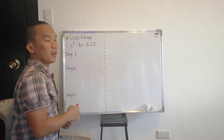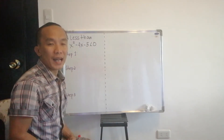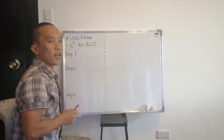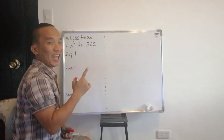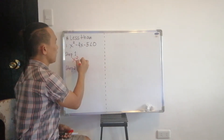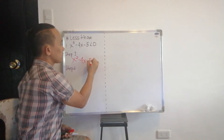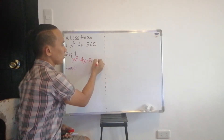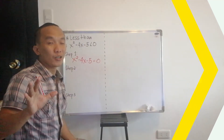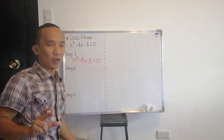Step one: since this is a quadratic inequality, we change the inequality into a quadratic equation. So we have x squared minus four x minus five equal to zero.